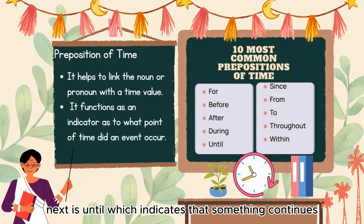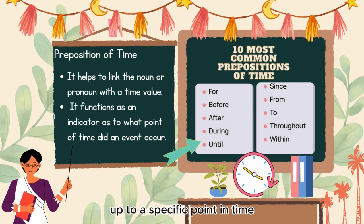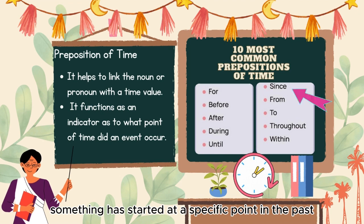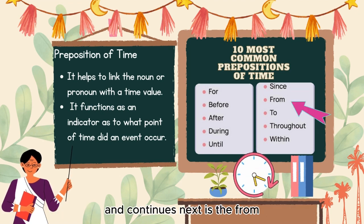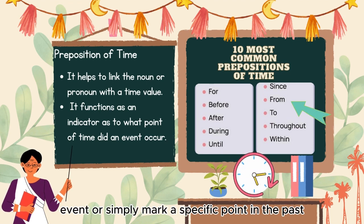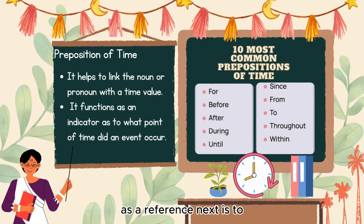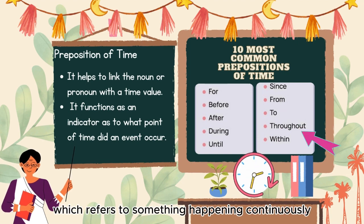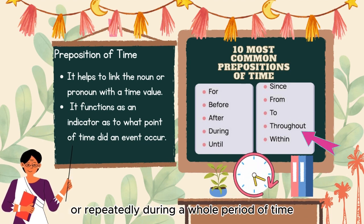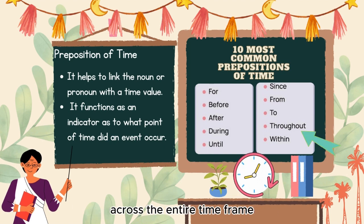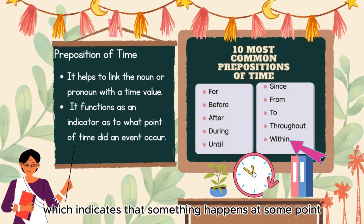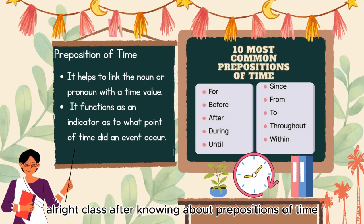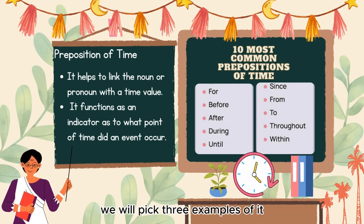Next is 'until,' which indicates that something continues up to a specific point in time, setting a limit or endpoint. 'Since' indicates something that started at a specific point in the past and continues to the present. 'From' indicates the starting point of a duration or event. 'To' indicates a point in time or suggests continuing an action up to a certain point. 'Throughout' refers to something happening continuously during a whole period, emphasizing it is spread across the entire time frame. Finally, 'within' indicates something happens at some point during a specific time frame without pinpointing an exact moment.